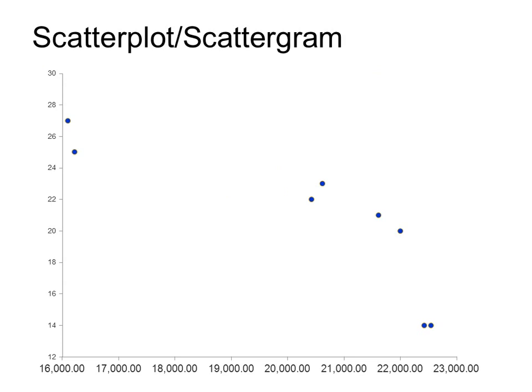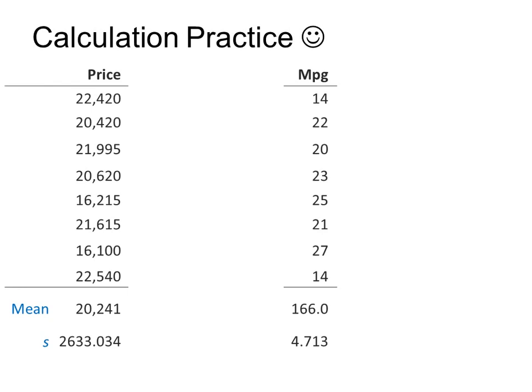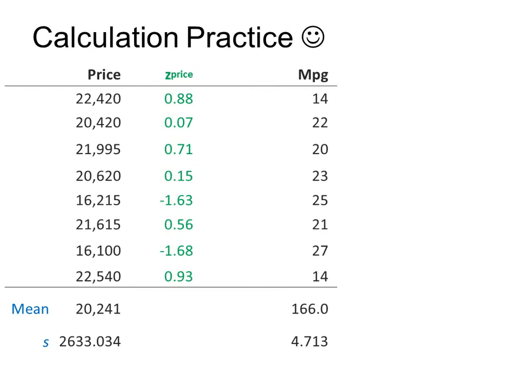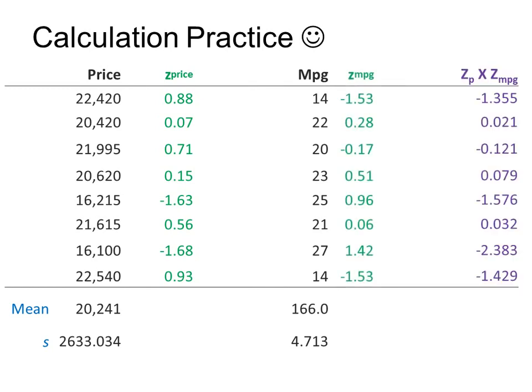Here's the car data scatter plot again. We can practice calculating the correlation coefficient. The z-score of price and the z-score of miles per gallon are calculated for each car. Multiplying the z-scores together and summing them, then dividing by 8, gives negative 0.84. So the correlation coefficient between car price and fuel efficiency is -0.84 — a strong negative correlation.